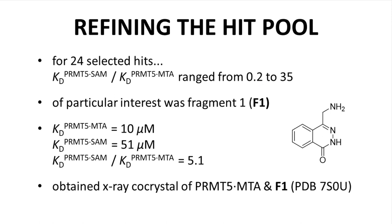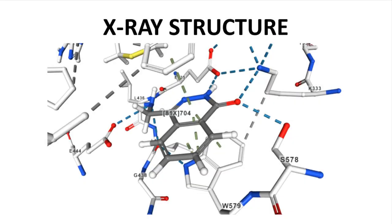One fragment hit stood out to the research team. Fragment F1, shown to the right, had a moderately high binding ratio of 5.1 and a fairly small KD of just 10 micromolar. The team was able to solve an X-ray structure of a co-crystal between PRMT5-MTA and F1. The structure has been deposited in the protein databank as entry 7S0U. Before we look at the co-crystal, take note of the structure of F1: we have an amino group with a bicyclic ring. One ring has two nitrogens and a carbonyl, and the other ring is just a benzene ring. Here is part of the co-crystal structure. In the middle of the screen, with the darker gray lines, is F1, our fragment hit. Surrounding our fragment are white lines for the nearby amino acids from the PRMT5-MTA complex.